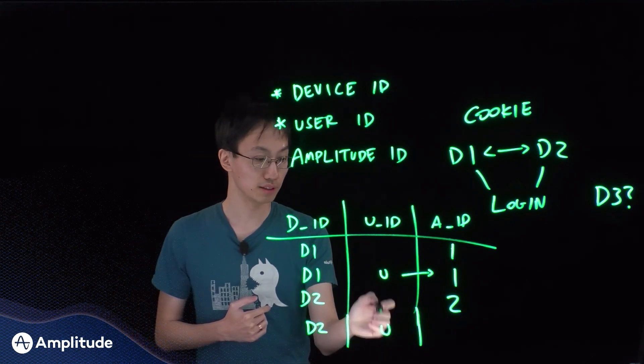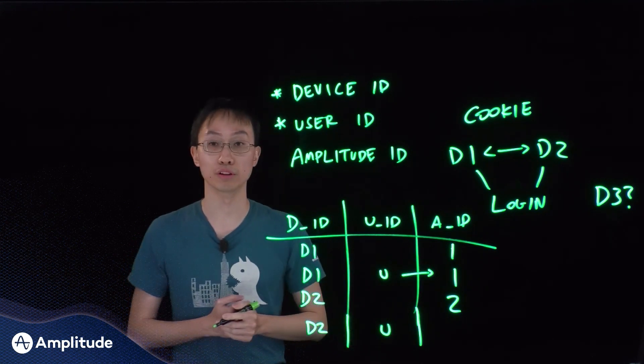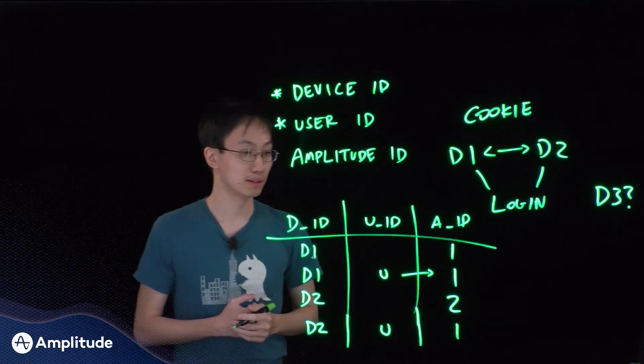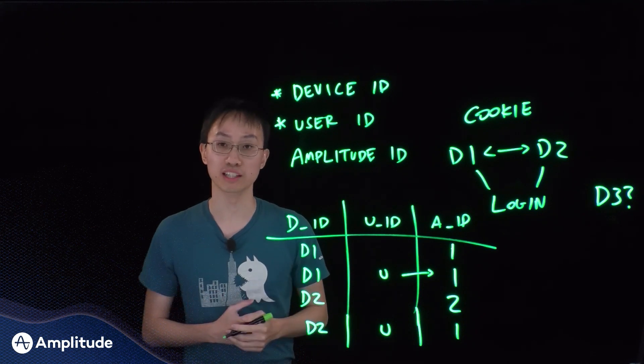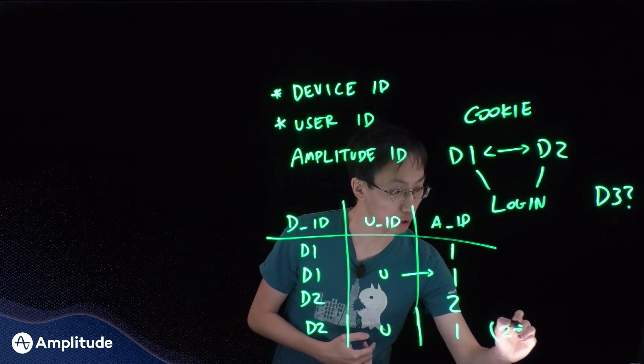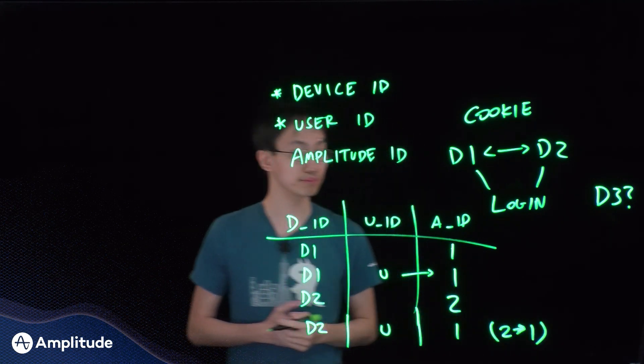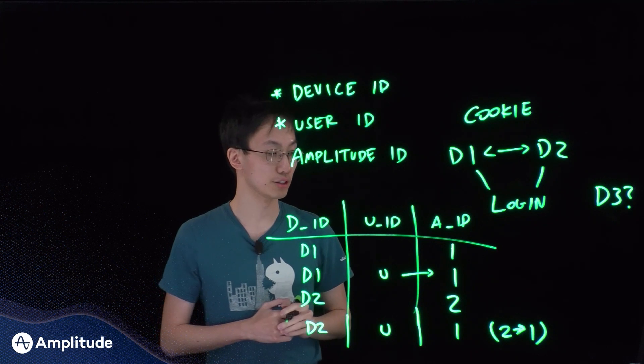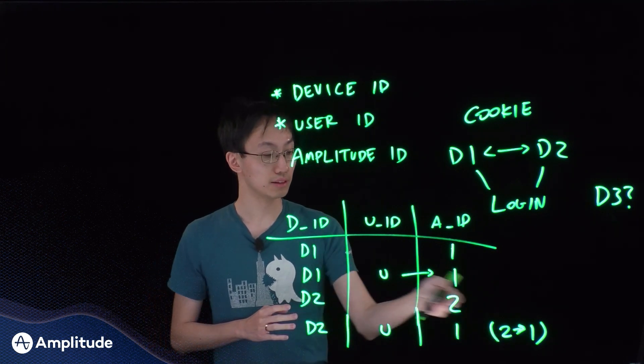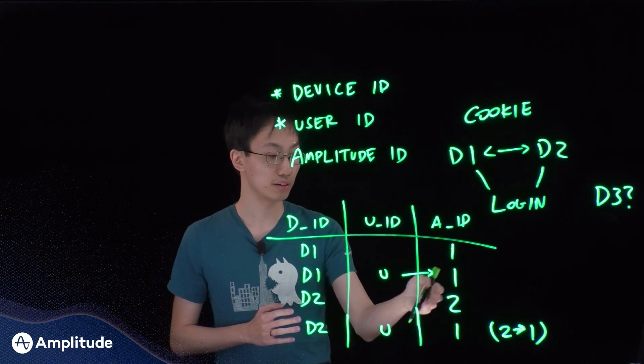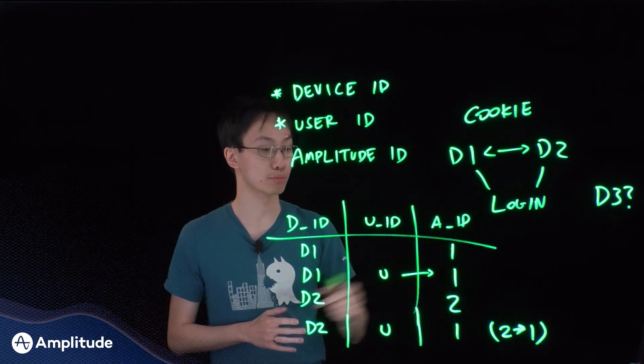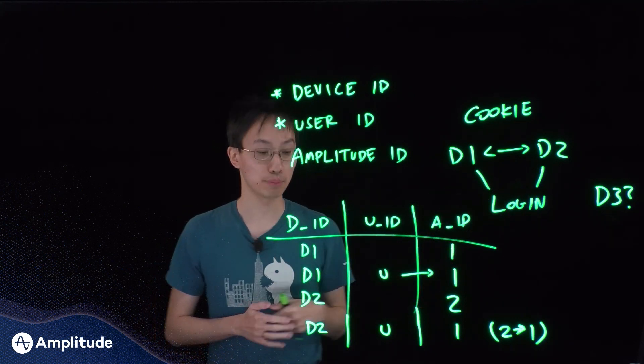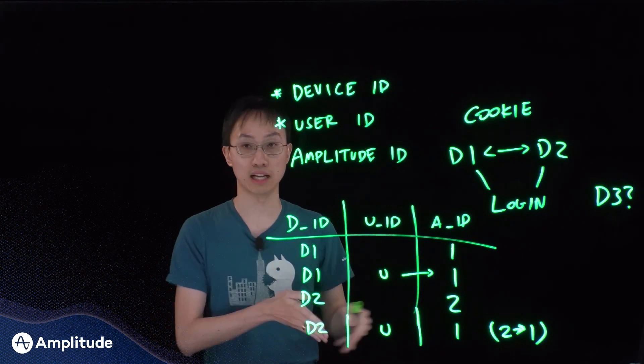But we need to remember the fact that we think user 2 and user 1 are actually the same people. And we're going to record it like this. This we call a merge, which is very similar to the concept of aliasing that we talked about earlier. But it's a slight difference in terms of the fact that it has a specific direction. These merges only happen from an anonymous device identifier to a canonical user identifier. And so the direction problem is kind of solved. And because they're based on this device ID and user ID scheme, we know how to identify it when it happens. It's specifically when the same user logs in on two anonymous devices.